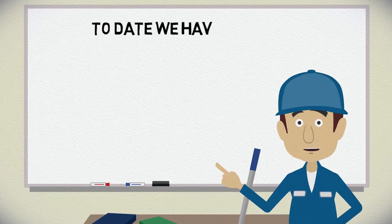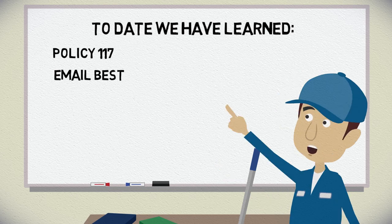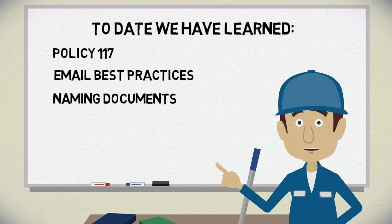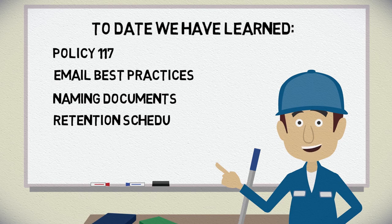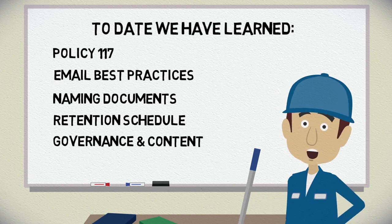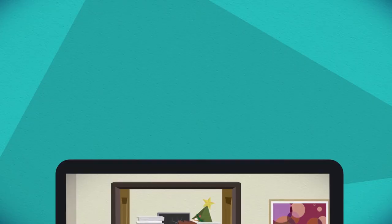In previous modules, we learned about Records Management Policy 117. We learned about email best practices, how to name documents, how to read a record's retention schedule, structured shared drives and other content systems, and how to send and recall records to manage storage.